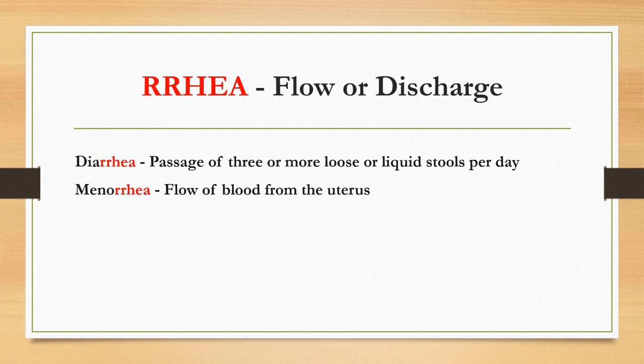The seventh one is '-rrhea' which means flow or discharge. For instance, diarrhea — passage of three or more loose or liquid stools per day. Menorrhea — flow of blood from the uterus.